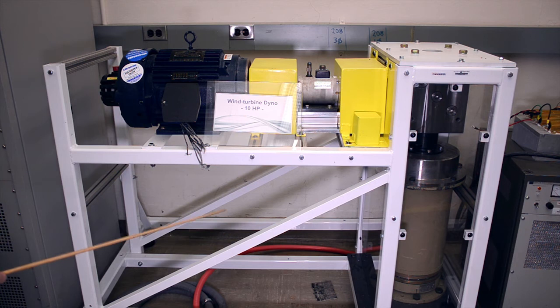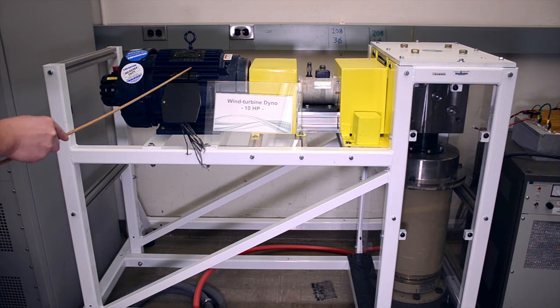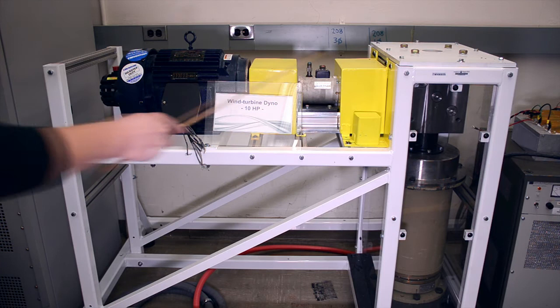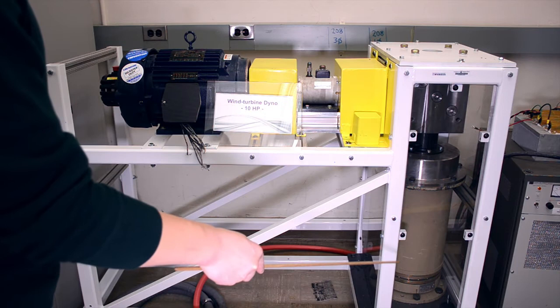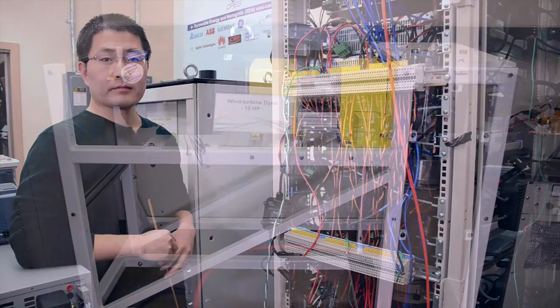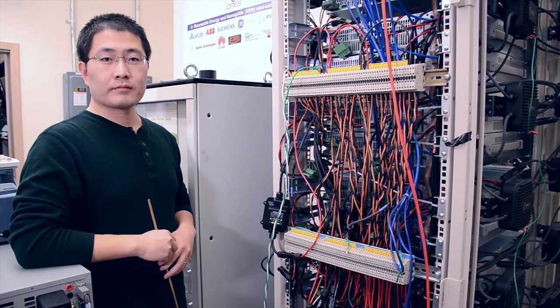The wind turbine emulator is shown here. It introduces two parts. The first part is a controllable motor, which provides the emulator for the wind speed and the torque to the generator, which is exactly the same model of the generator installed in the real wind turbine system.